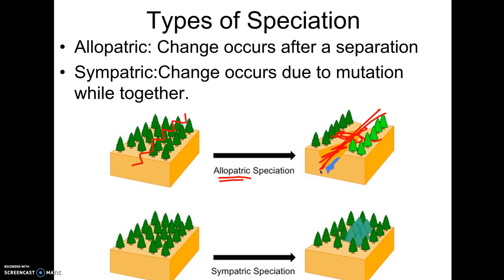The other kind is called sympatric speciation. Sympatric speciation happens while organisms are still in contact with each other. Typically, this refers to plants. If you think about it, if you have an animal born with a mutation that it can't mate with anybody around it, how is it going to possibly form offspring? You wouldn't actually get a new species — the animal would just die and never pass its genes on.